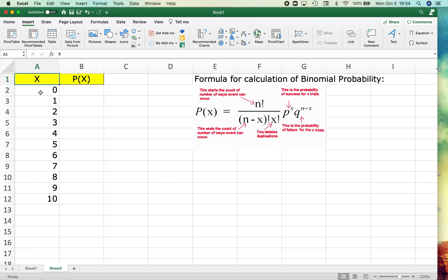So the possible successes is always going to start with zero. Zero would be that they were all failures, none of them were successful, all the way down to how many trials you were doing.